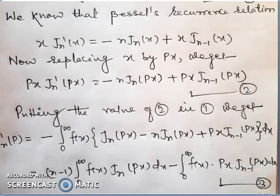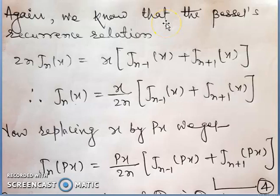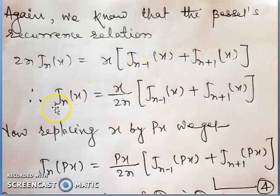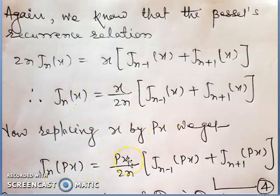Now again using the recurrence formula of the Bessel function: 2n*jn(x) = x*[j_{n-1}(x) + j_{n+1}(x)], so jn(x) = x/(2n) * [j_{n-1}(x) + j_{n+1}(x)]. Replacing x by px: jn(px) = px/(2n) * [j_{n-1}(px) + j_{n+1}(px)]. This is equation 4.